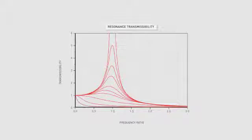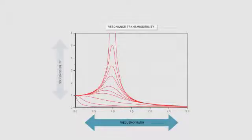In a simple system with a response like this graph, changes in stiffness produce left and right movement of the peak, and changes in damping produce up and down movement of the peak.